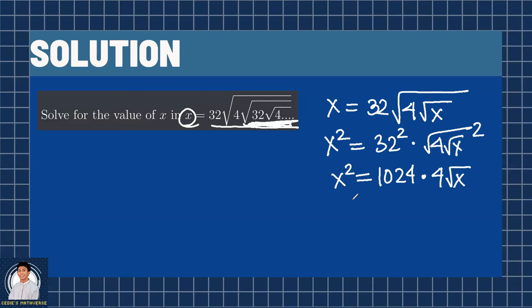Are we done? Not yet. We square both sides once again, so we end up with x squared squared equals 1024 times 4 squared, then times square root of x squared squared, which is x.